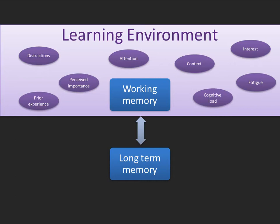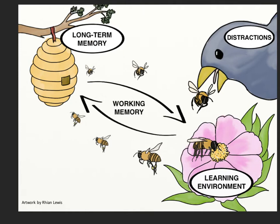Our working memory is totally immersed in our learning environment, and many things can affect how well we encode information: distractions, prior experience, whether we're paying attention, the context, whether we're tired, whether we're interested, and cognitive load. My daughter, who's a beekeeper, drew a lovely diagram to demonstrate this. If you think of pollen as new information that bees are trying to encode into honey — representing long-term memory — there are a lot of distractions and other things in the environment that can affect this encoding process.